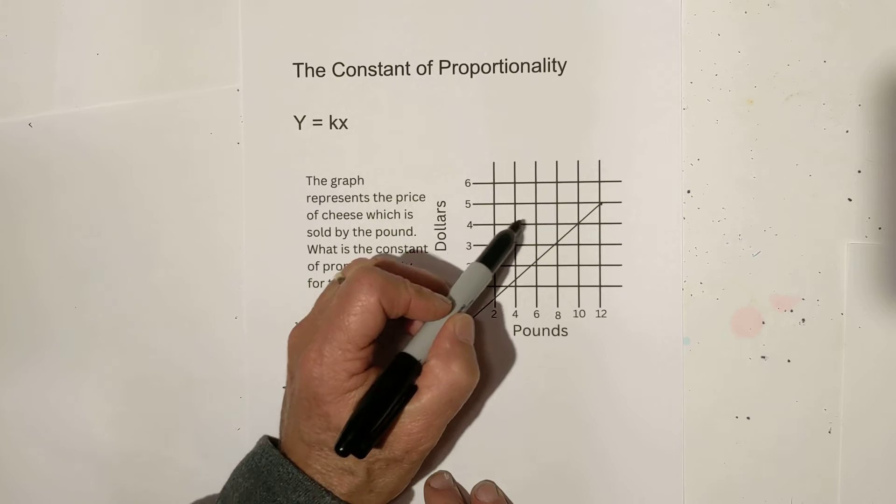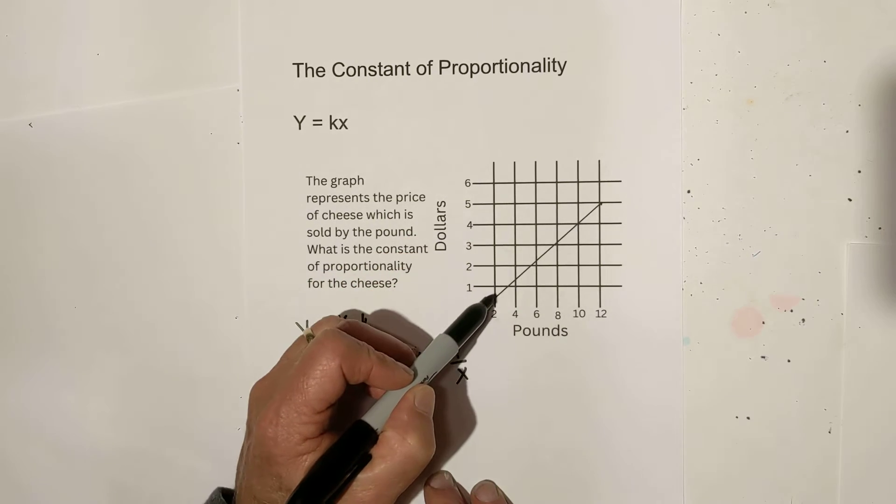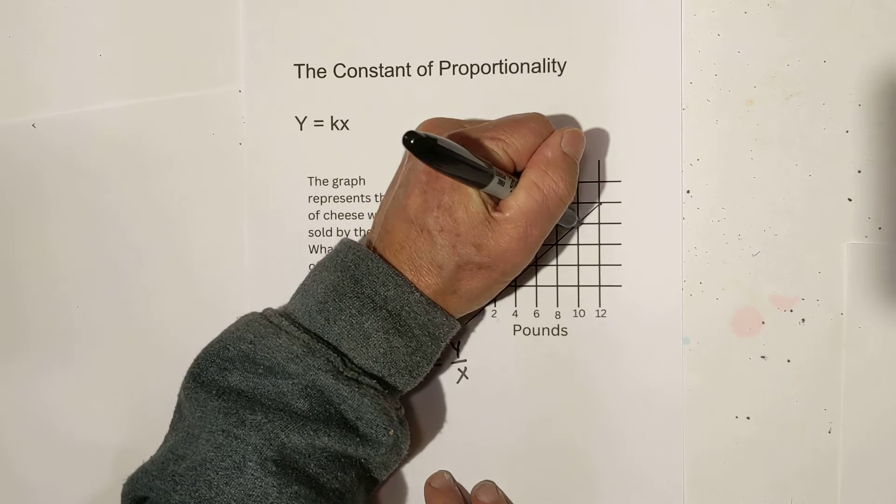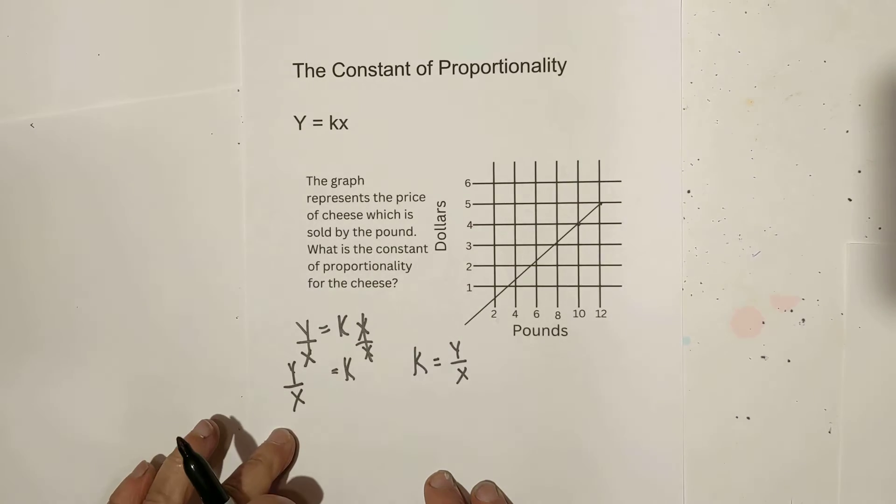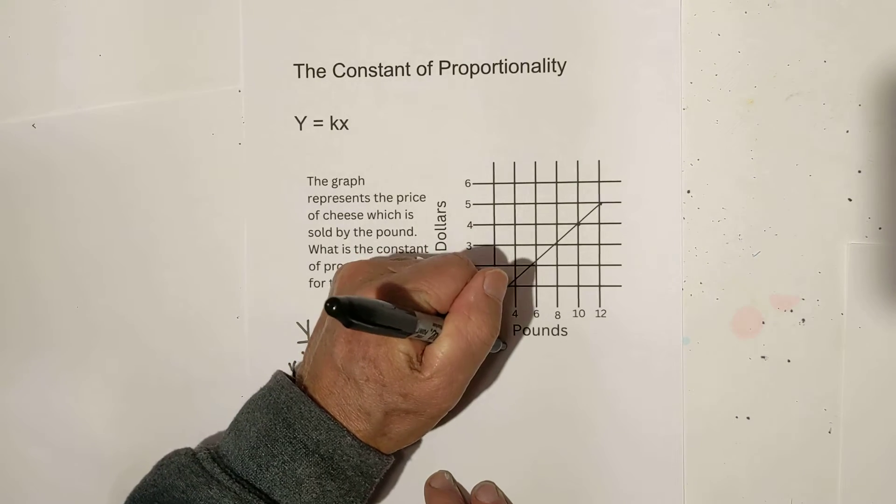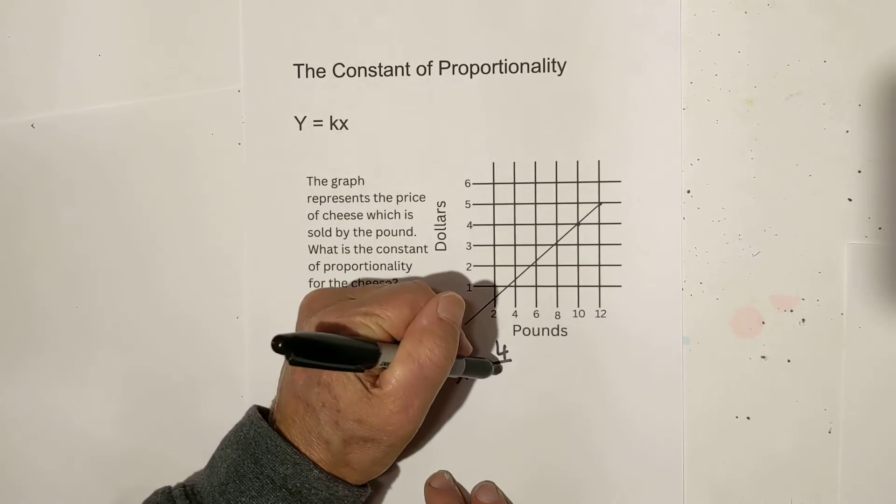Well, let's use this graph and let's look and see where it intersects exactly. And if I move up, I see this point right here. So, y equals 4, x equals 10.